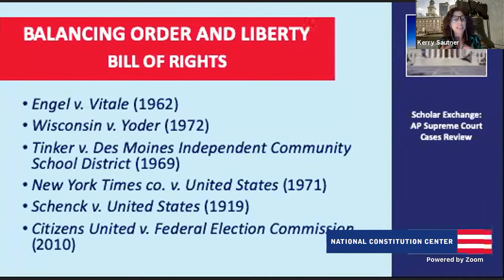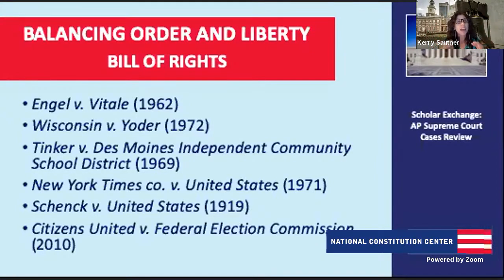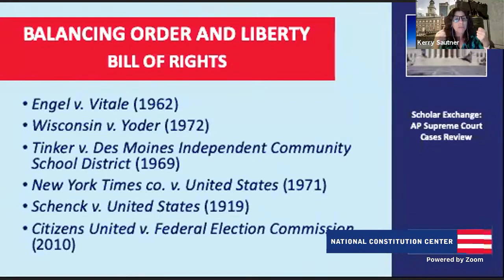Now let's go to court cases around the balance between order and liberty — the idea that we give away rights to a government to have a government, but certain unalienable rights the government cannot step on. This tension between how we make sure government has the power it needs while individual rights are protected is what the Bill of Rights is all about. Sometimes the two come into friction with each other, and these court cases show that tension.